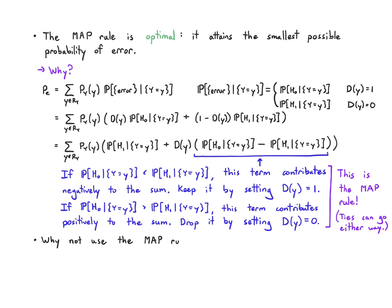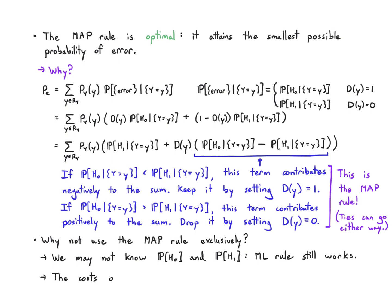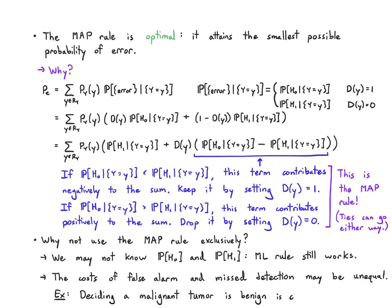Since the MAP rule is the best, why not use it exclusively? The problem is that in practice we may not know the probabilities of the hypotheses, and in that case we could still use the ML rule but not the MAP rule. Another reason might be that the costs of false alarm and missed detection are unequal — for instance, deciding a malignant tumor is benign has a higher cost than falsely declaring a benign tumor is malignant. The MAP rule always weights the two kinds of errors equally and presumes we know the true hypothesis probabilities, which in many cases we do not.